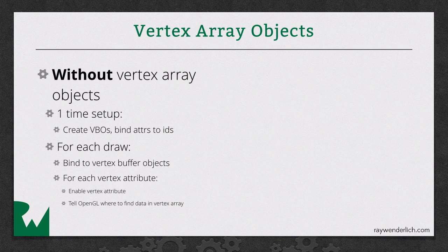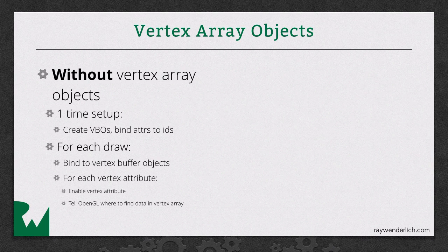Without vertex array objects, we have a one-time setup where we create our vertex buffer objects. We also have some code that takes our attributes and binds them to IDs. Then for each draw, we have to bind our vertex buffer objects to be active — the vertex buffer and the element array buffer. And then for each vertex attribute, we have to enable it and tell OpenGL where to find the data inside the array. So in other words, our draw routine has a fair bit of code just to get something rendering, and we have to repeat that every draw.